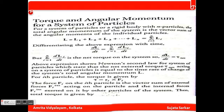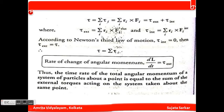Newton's second law for a system of particles states that the net external torque acting on a system equals the time rate of change of total angular momentum. The torque τ equals summation of r_i cross F_i, where the force on the ith particle is the vector sum of external and internal forces. So τ equals τ_external plus τ_internal. By Newton's third law, τ_internal is always zero, so dL/dt equals τ_external.